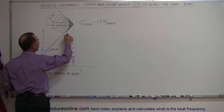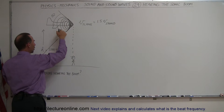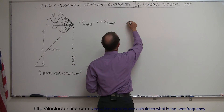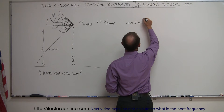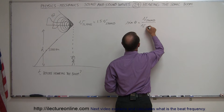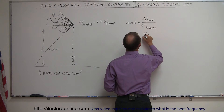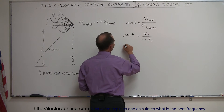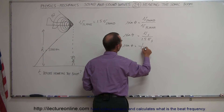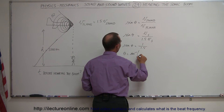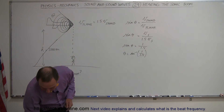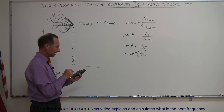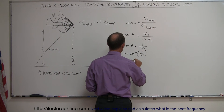So if we know this angle right here, we can figure out this angle, because these would be two alternate interior angles, and they are equal to each other. The equation to find that angle is that the sine of theta is equal to the velocity of sound divided by the velocity of the plane. In this case, velocity of the plane is 1.5 times velocity of sound, so the sine of theta equals 1 divided by 1.5, or theta equals the arc sine of 1 divided by 1.5, which gives us 41.8 degrees.